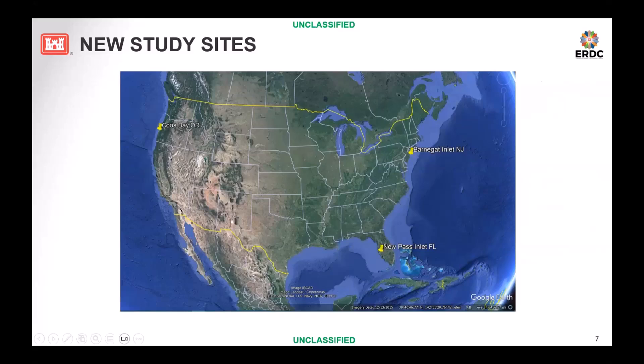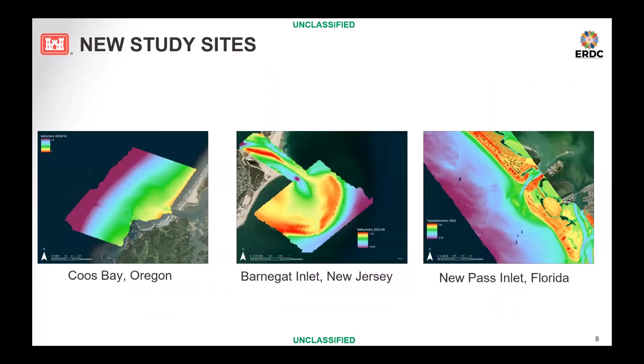We're going to be applying those methods in three different inlets: one on the Atlantic side — Barnegat Inlet — one on the Gulf side — New Pass Inlet — and Goose Bay on the Pacific coast in Oregon. Here we can see the bathymetry of those inlets, and you can see they have different size and shape, basically related to the wave regime and tide of each coast.